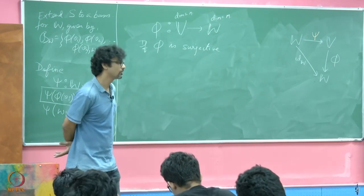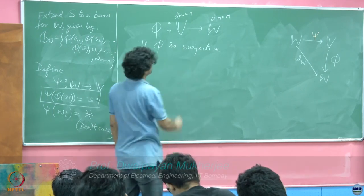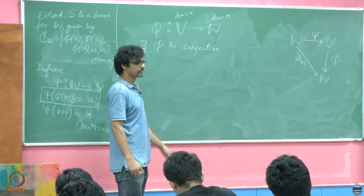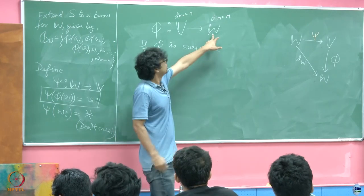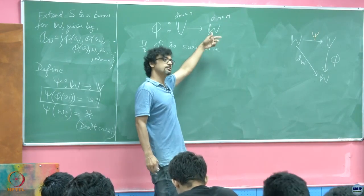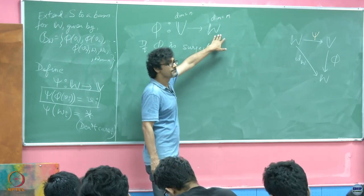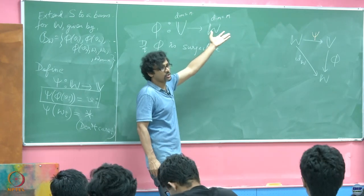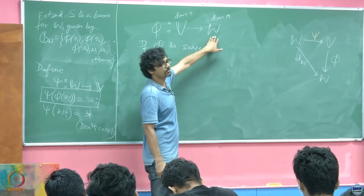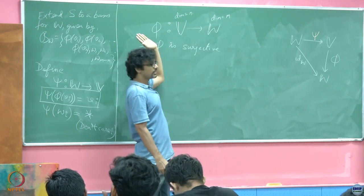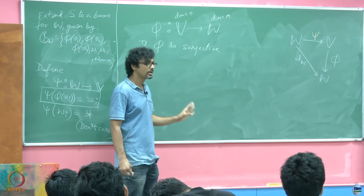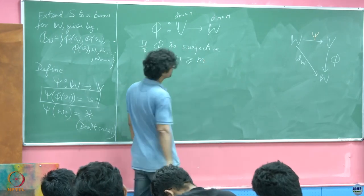Going back to the previous lecture: if phi is a surjection, then W equals the image of phi, because every element in W has a pre-image in V. So the dimension of the image is m. The kernel is presumably non-zero — if it were zero it would be a bijection. On the left-hand side we have n, so n minus m equals the dimension of the kernel, which is a non-negative integer. Therefore n is greater than or equal to m.